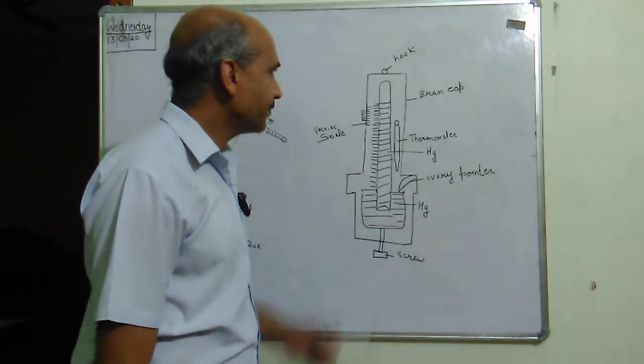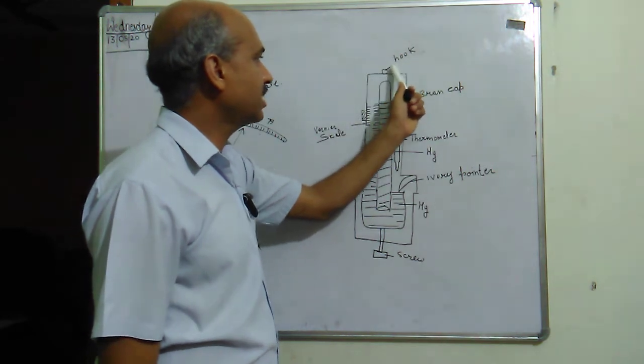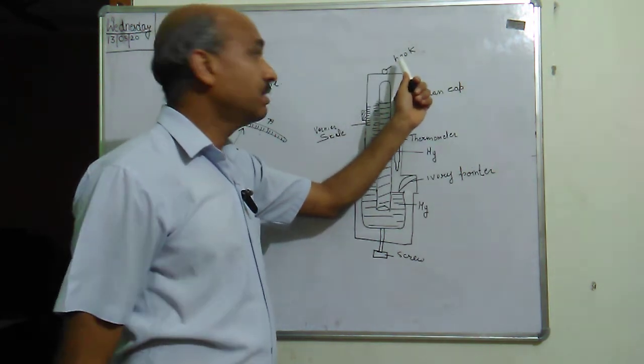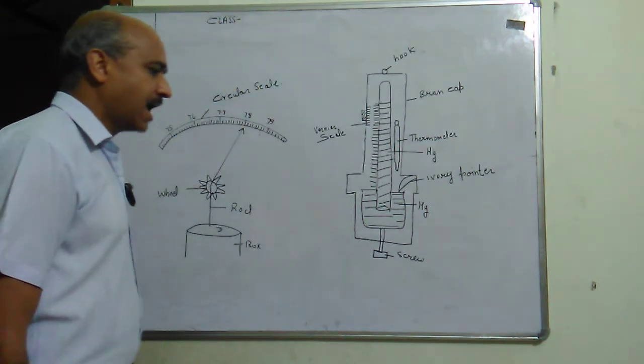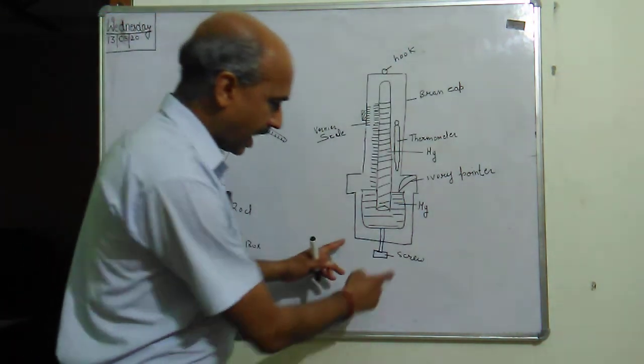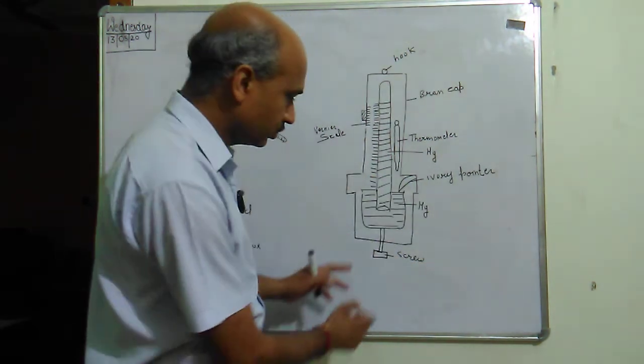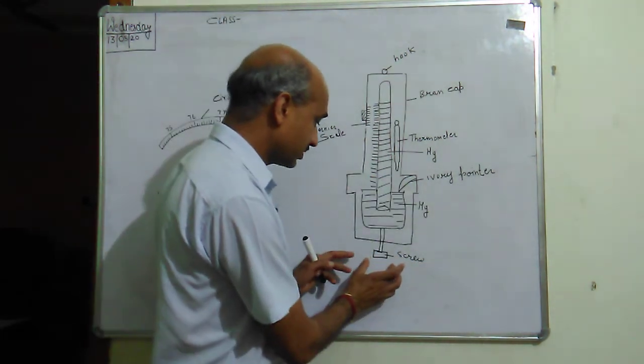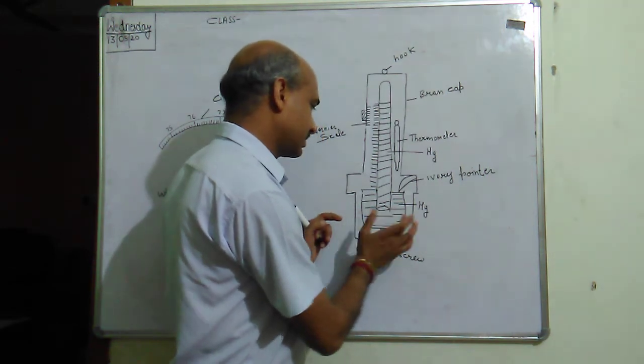We also have this hook. What does this hook do? It helps us to hang it on a wall. And at the bottom of this brass cabinet we have a screw. The screw's function is simply to adjust the level of the mercury in the tube inside.